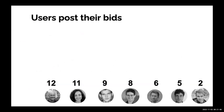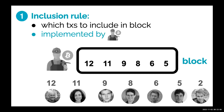Let me explain the model for transaction fee mechanism design, which differs somewhat from classical mechanism design. We have a bunch of users, each with a true value — for example, if Kim's transaction is confirmed, she gets utility 12. Users post bids, and ideally the mechanism incentivizes truthful bidding. The miner constructs a block picking up a set of these bids.